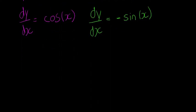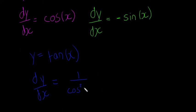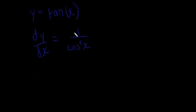Tan is a bit different. If you have y is equal to tan of x, then your dy/dx will be equal to 1 over cos squared of x. This one's a little bit weird — they don't ask it as often as cos and sine, but if they do ask it, it's just equal to 1 over cos squared of x.